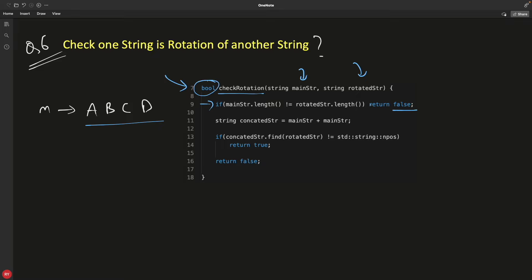If it is false, I mean, if it is not rotated string, then return false. Otherwise, true. So if length is equal, then we'll do this concatenation. So this is concatenated string, main string plus main string. And now, this is the magic.